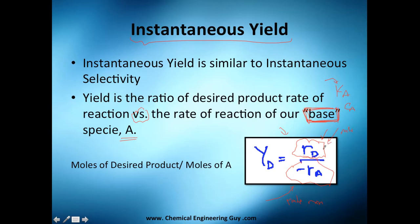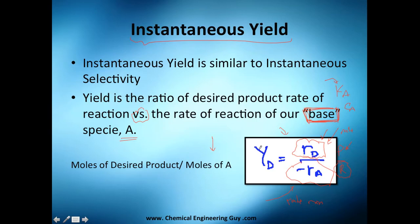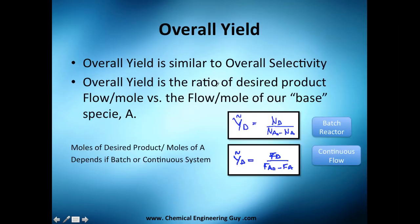D is a product and A is a reactant, so we're comparing how many moles of desired product we're producing versus the reactant being consumed. Low yields mean the reactant is reacting but not giving us our desired product, which is very bad — it means you are producing the undesired product, wasting that reactant. So A went to the undesired product, and that's a very bad outcome.